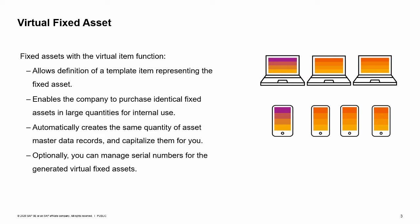When your company needs to purchase identical fixed assets in large quantities for internal use, create a virtual item representing the fixed asset. In the AP invoice, choose this template item and enter a certain quantity in the item row. SAP Business One automatically creates the same quantity of asset master data records and capitalizes them for you. Using this function can free you from having to manually enter large amounts of repeated information, hence helping to improve your company's efficiency in managing fixed assets.